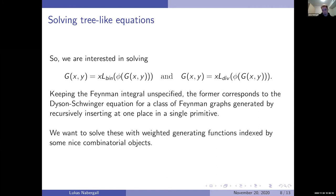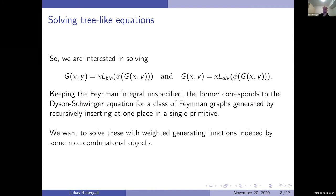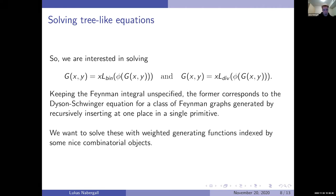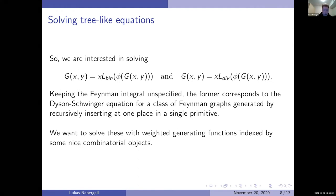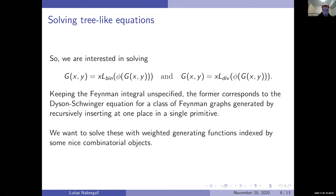What we were interested in — along with Karen, and what others have looked at as well — is solving these as some weighted generating functions indexed by nice combinatorial objects. This has already been done for the first equation with the binomial 1-cocycle, but not for the second one. As far as I know, no one has looked at the second one before.